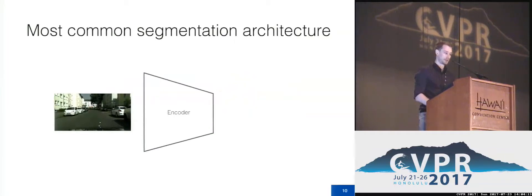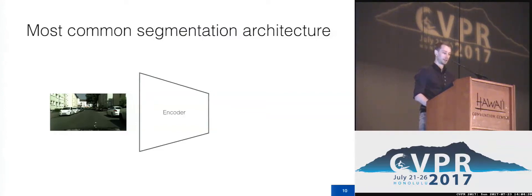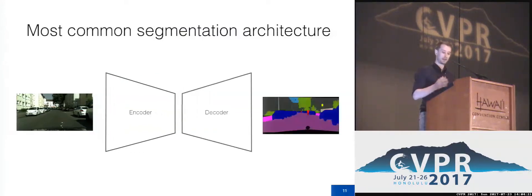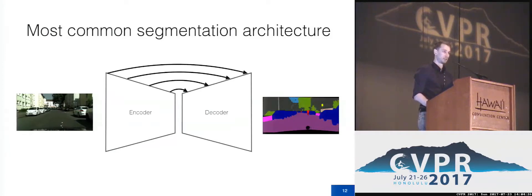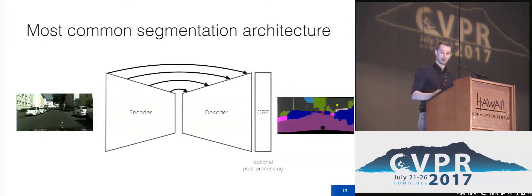In order to do semantic segmentation with an image classification network, what you usually do is use the classification network as an encoder, then add a decoder to come back to full image resolution. Usually, you add some long-range skip connections to propagate high-resolution features, and optionally add a CRF post-processing step to improve the performance around boundaries.